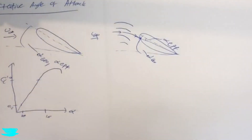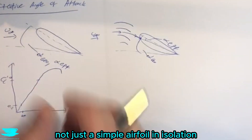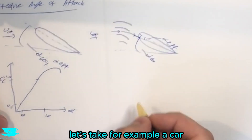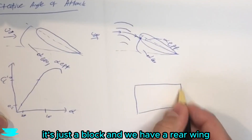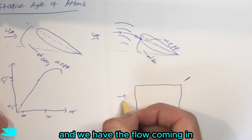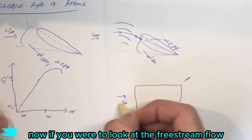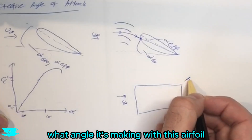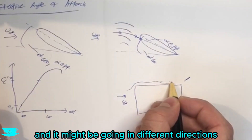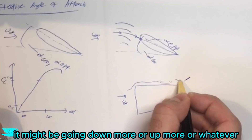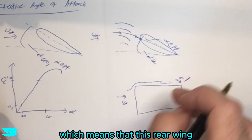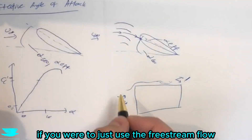Why is this important? When we look at more complicated objects — not just a simple airfoil in isolation — what's happening around that object before the flow hits the airfoil is very important. Take a car for example: a simplified block with a rear wing at the back and u-infinity coming in. If you look at the free stream flow you might calculate an angle of attack of 20 degrees, but the flow coming around the car may be going in different directions by the time it hits the rear wing — going up more or down more — changing the effective angle of attack and meaning the rear wing produces different amounts of downforce than you'd calculate using just the free stream flow.